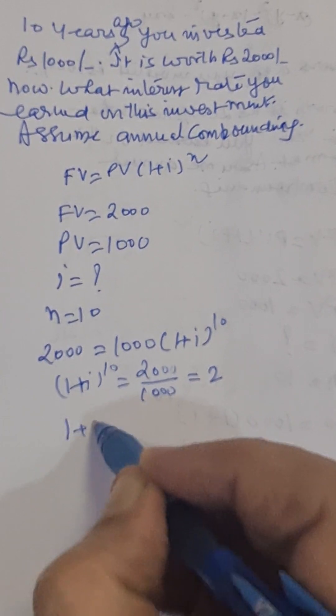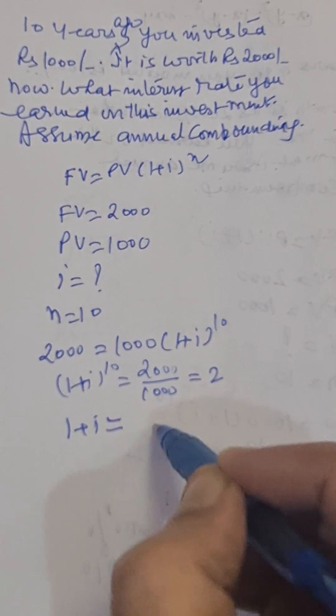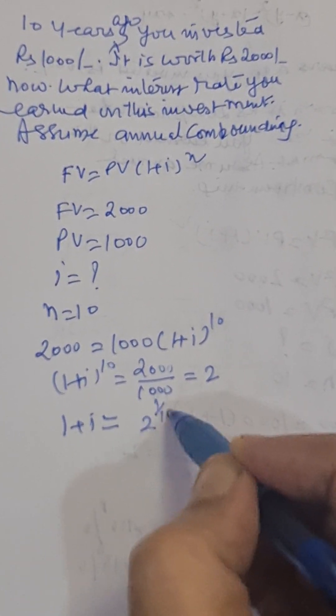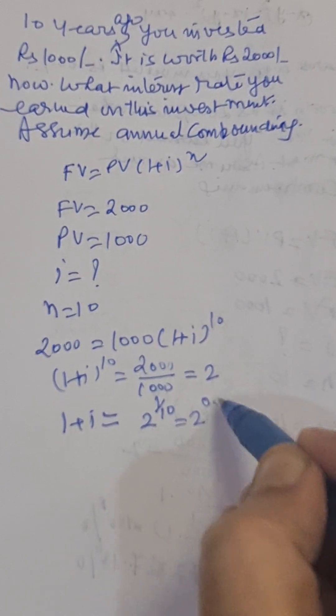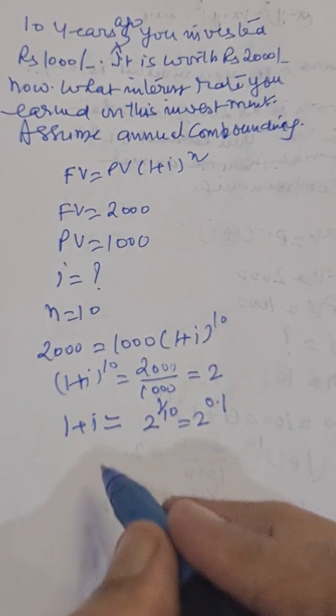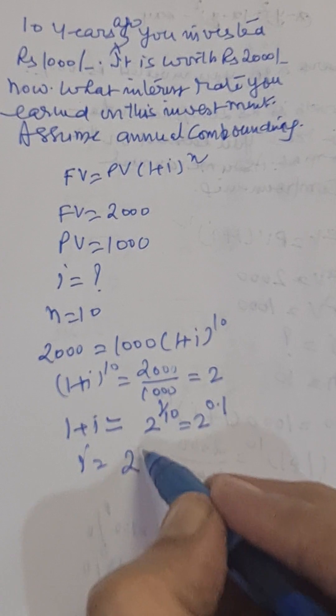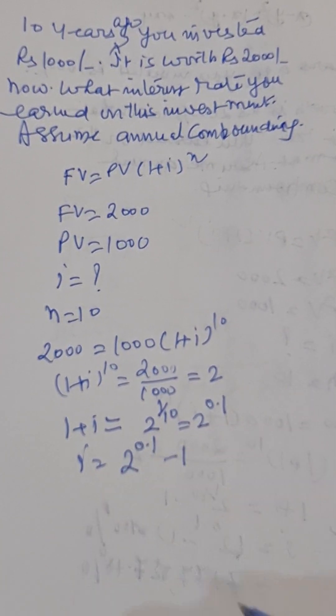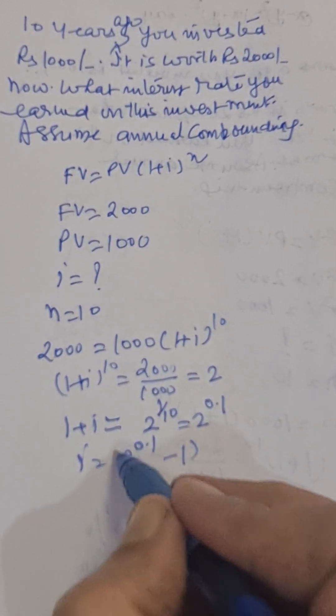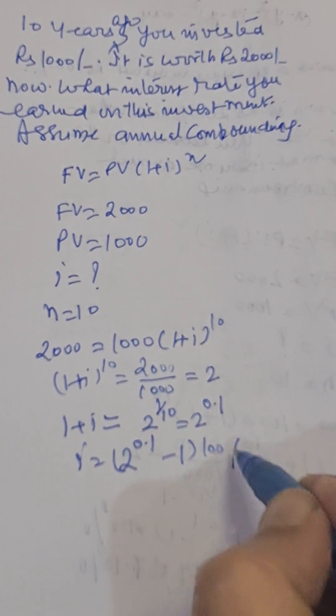Further we can write one plus I raise to the power one by ten or two raise to the power zero point one, or I equal to two raise to the power zero point one minus one into hundred percent.